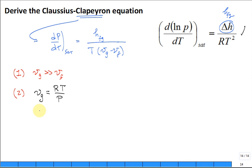it's often a good approximation that V_G is equal to RT over P. What's RT over P? Do you recognize that second equation?